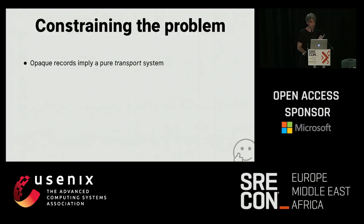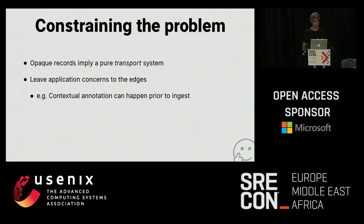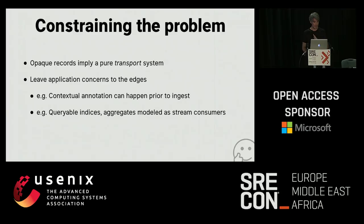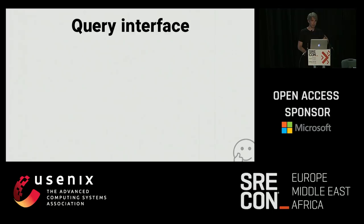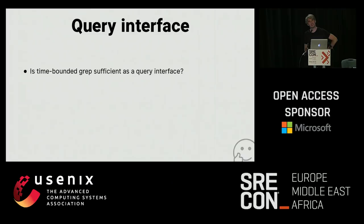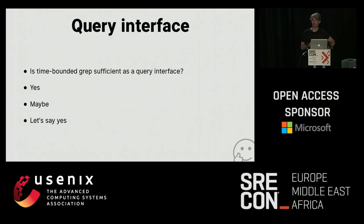Opaque records imply a pure transport system — we're not going to deal with parsing or interpreting messages. Contextual annotation like which cluster or node it's running on can happen prior to ingest; that's not our concern. Things like queryable indices or rollups can be modeled as stream consumers at the other end. The only metadata we have is the timestamp at ingest time, which we can reliably get. So: is time-bounded grep a sufficient query interface? I want to claim that it is and see if what we get at the end is useful.